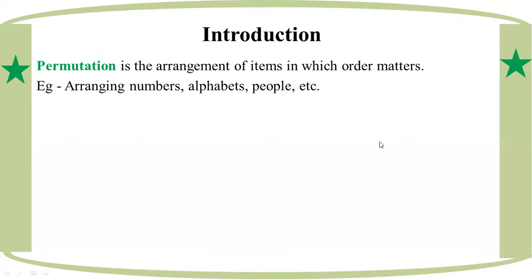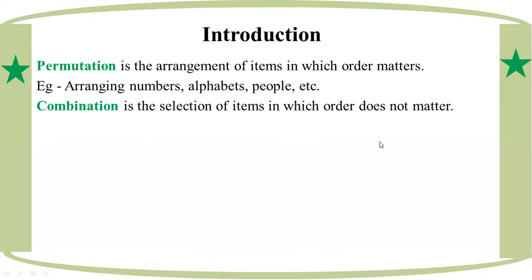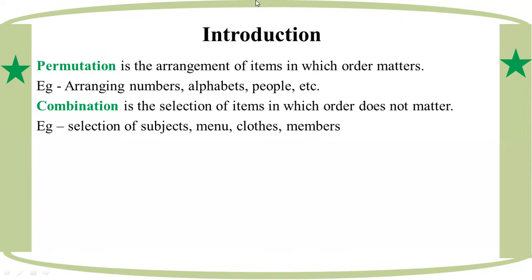Combination is the selection of items. In combination, the selection of items cannot be written in any order — the order does not matter. For example, combination is about selection of subjects.